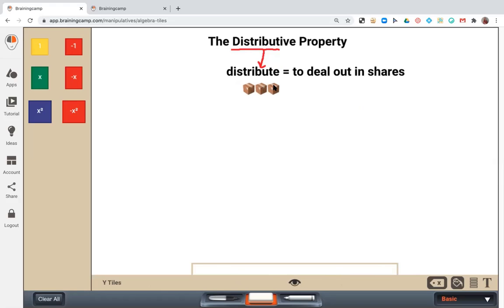So when we're thinking about the distributive property in terms of math, it's really the same thing in that we are going to distribute a term or a quantity that is outside the parentheses to a quantity that's inside the parentheses.